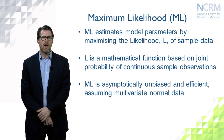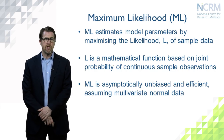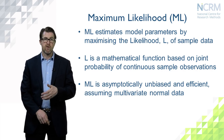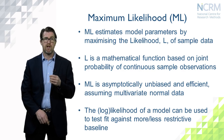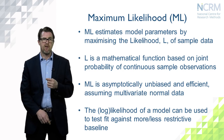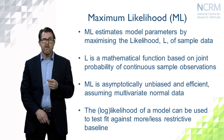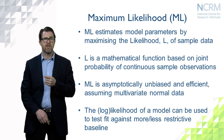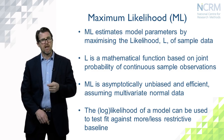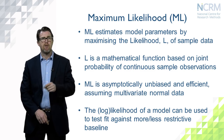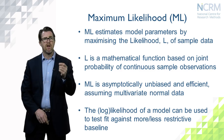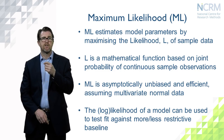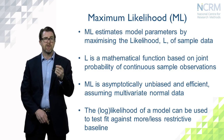Maximum likelihood is used in SEM not just for estimating unknown parameters, but also through use of the log likelihood to test how well the model fits compared to some more or less restrictive alternative. So maximum likelihood serves two purposes in SEM: estimation of unknown parameters, and use of the log likelihood to assess how well the model fits the observed data.